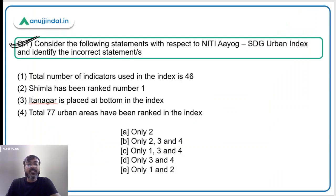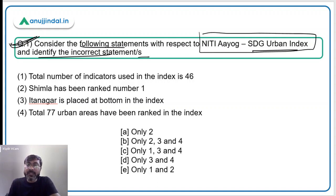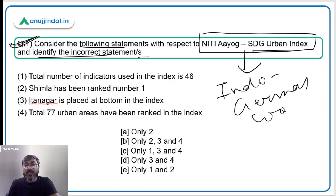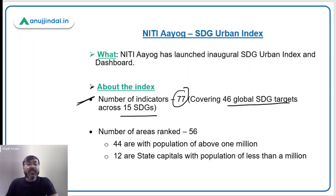The very first question is very important because it talks about the recently released NITI Aayog SDG Urban Index. You have to consider the following statements with respect to the NITI Aayog SDG Urban Index and identify the incorrect statement. Remember, this index was formulated through Indo-German cooperation. There are a total of 77 indicators, and out of these 77, there are 46 global SDG targets across 15 SDGs.